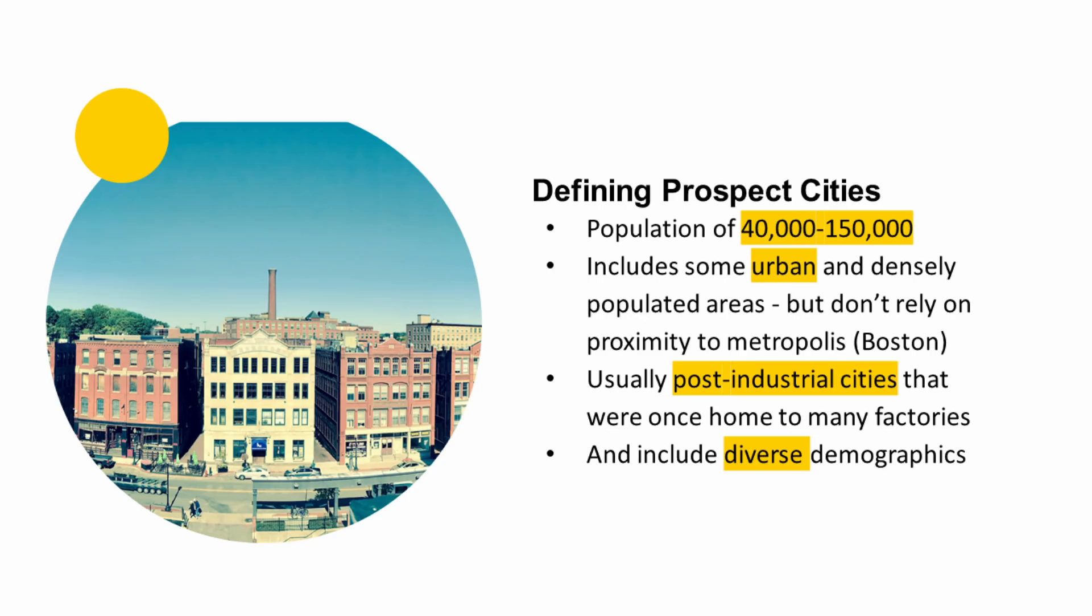And so there wasn't really a term to define prospect cities because we weren't rural. We weren't totally suburban. We had an urban core. And so we came up with our own definition for prospect cities. And prospect cities have a couple of key characteristics. The first is they have a population between 40,000 to 150,000 people. So they're not too small to make it feel like you're out in farmland, although we do have some farmlands.